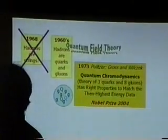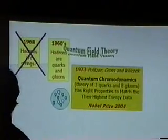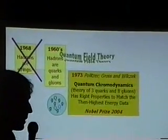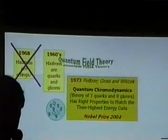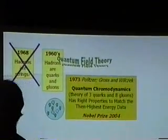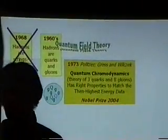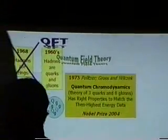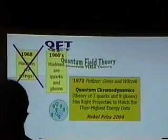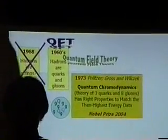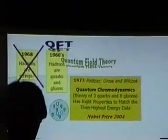A bit more terminology: quantum chromodynamics, the theory of quarks and gluons, is a particular example of what physicists call a quantum field theory. I mention that because quantum field theory is going to come up again and again, and because what I really do for a living is quantum field theory. It has a nice acronym — QFT — so whenever you see QFT, think quantum field theory. An example of that is quarks and gluons.